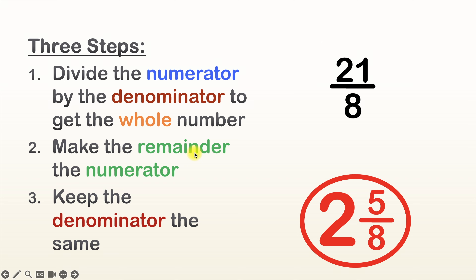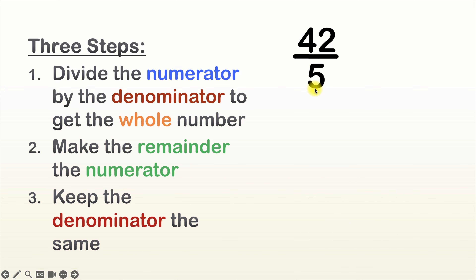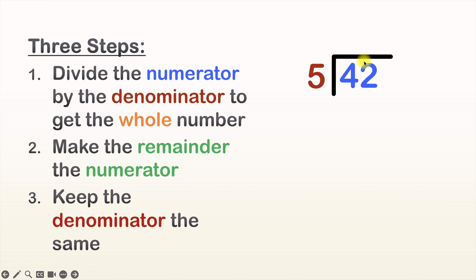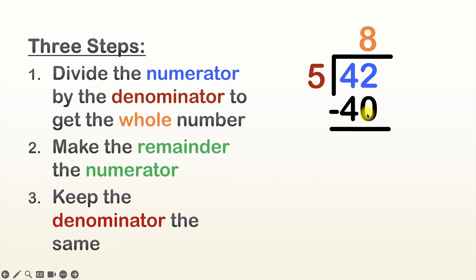Let's go to our next example. Here we've got 42 over five. Step one is to divide the numerator by the denominator to get the whole number. The numerator is 42 and the denominator is five. Let's set up our long division notation, placing the numerator inside and keeping the denominator outside. How many times can five go into 42? That's eight times. Eight times five is 40. We'll place 40 under 42 and subtract — 42 minus 40 gives us two. Now we're done with the long division.